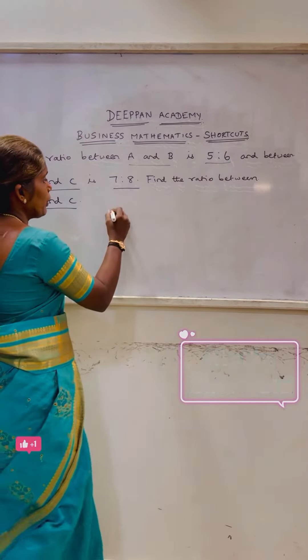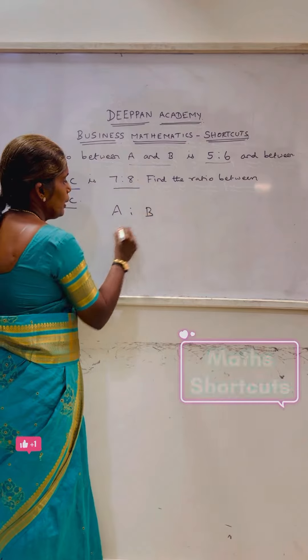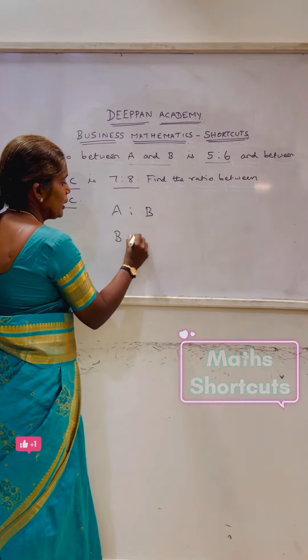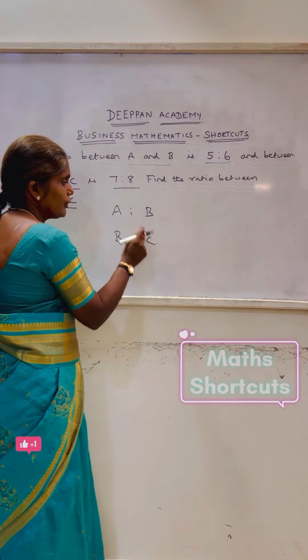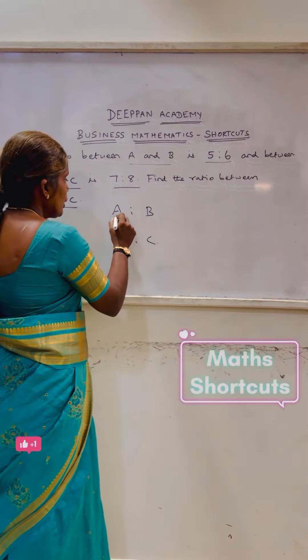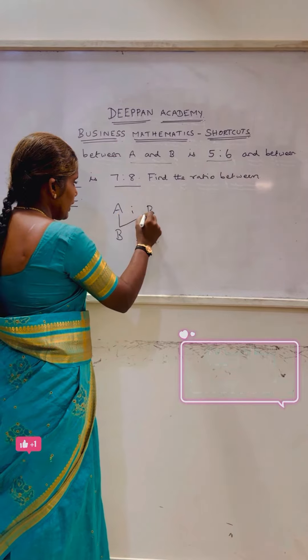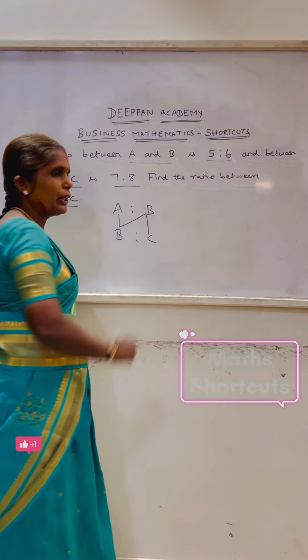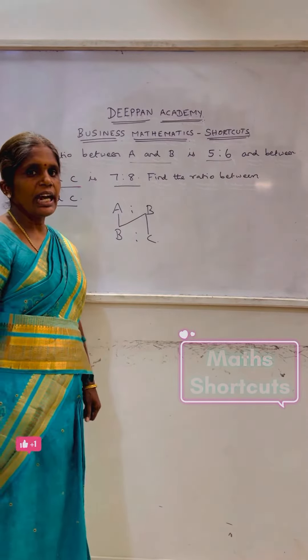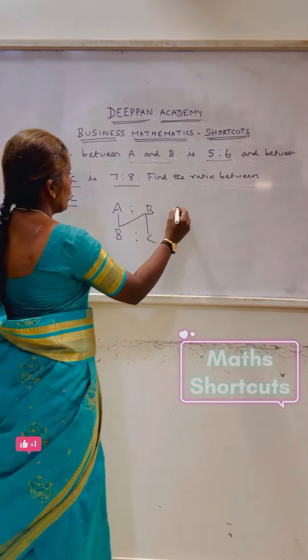Now we will do that. A is to B, B is to C — this is a continuous proportion. How do we do that? We use the Reverse N method. Use it, it is simple.